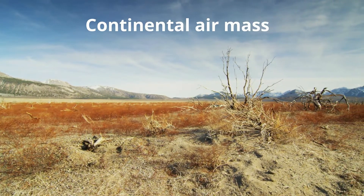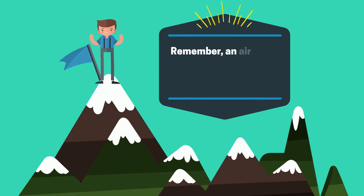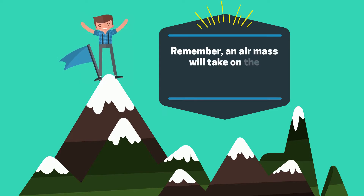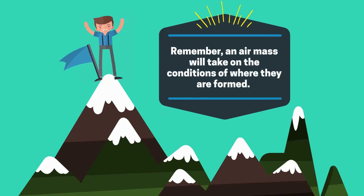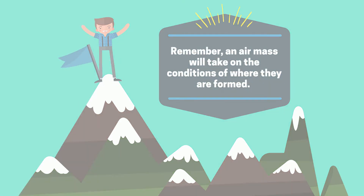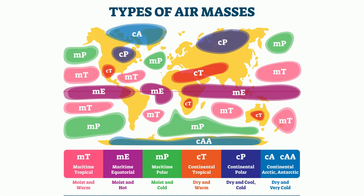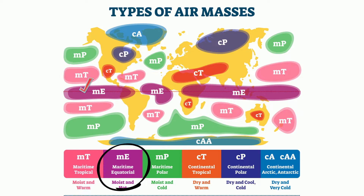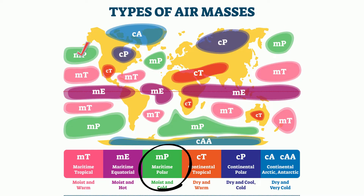Remember, an air mass will take on the conditions of where they are formed. Let's take a look at many of the air masses found on Earth. A maritime tropical air mass is warm and moist. A maritime equatorial air mass will be hot and moist. A maritime polar is cold and moist.